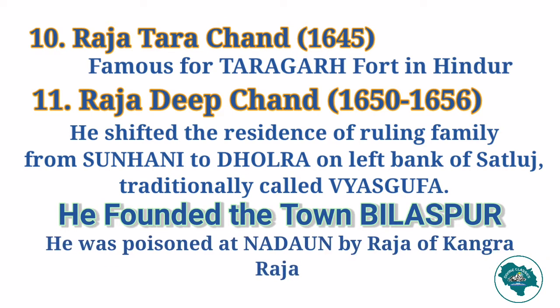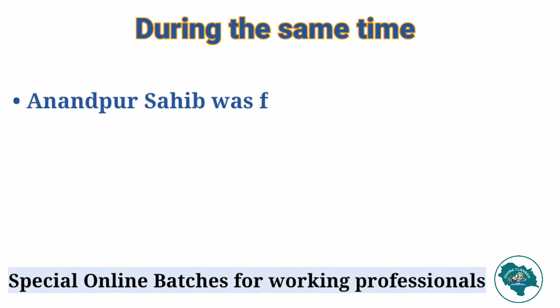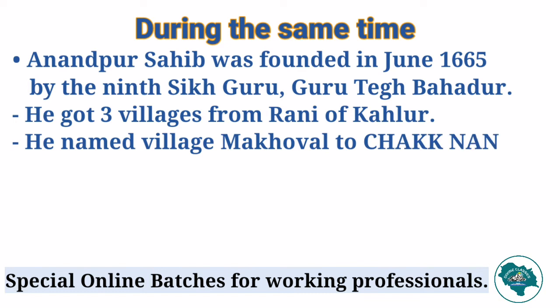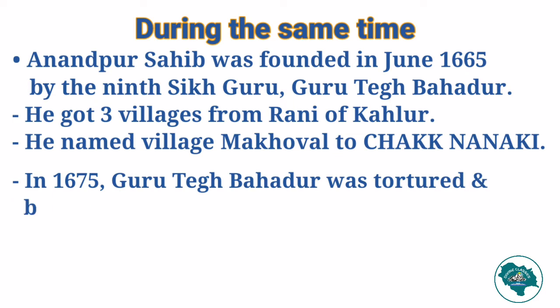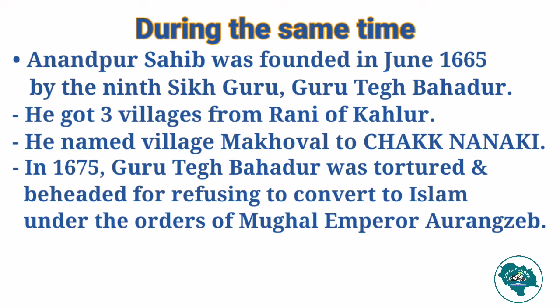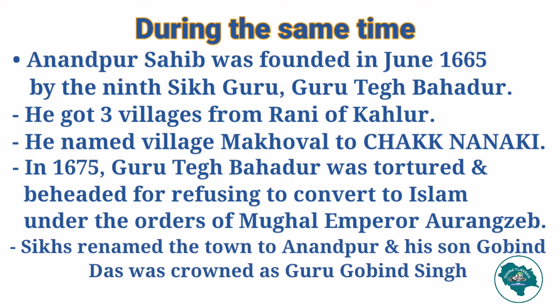Raja Deepchand was poisoned at Nadon by Raja of Kangra, Chandrabhan Chand. During the same time, Anandpur Sahib was founded in June 1665 by the 9th Sikh Guru, Guru Teg Bahadur. He got three villages from the Rani of Kehlur. He previously lived in Kiratpur but, given disputes with Ram Rai, moved to the village of Makhovan and named it Chak Nanaki after his mother. In 1675, Guru Teg Bahadur was tortured and beheaded for refusing to convert to Islam under the orders of Mughal emperor Aurangzeb.